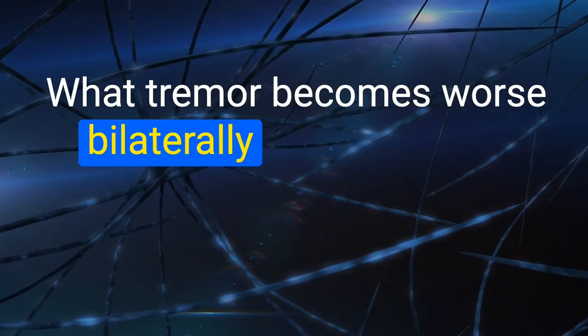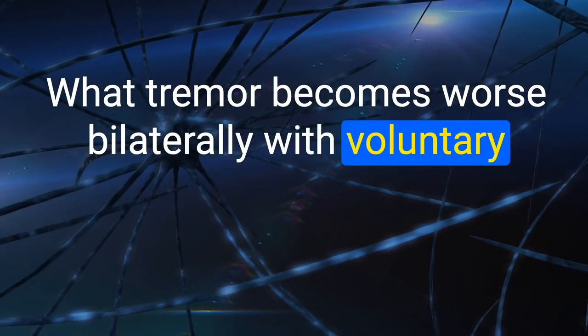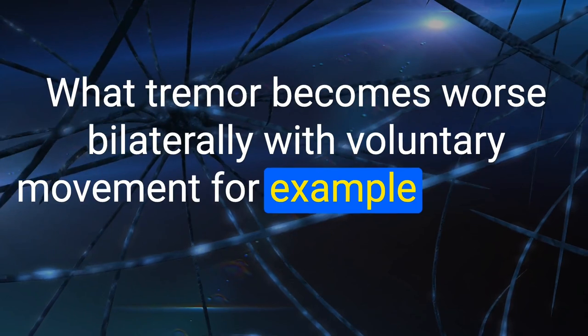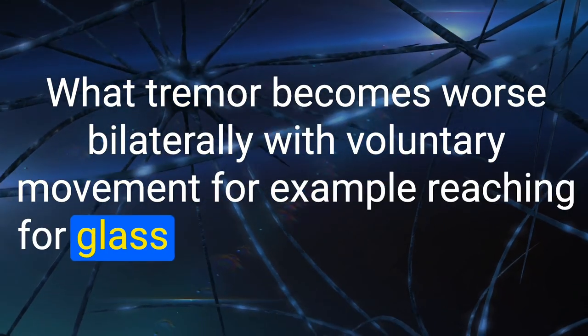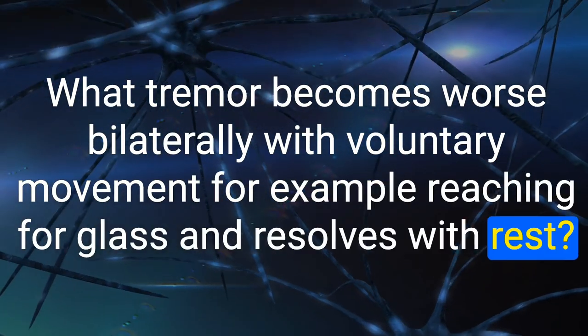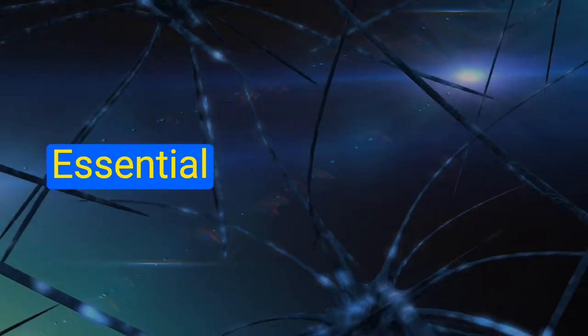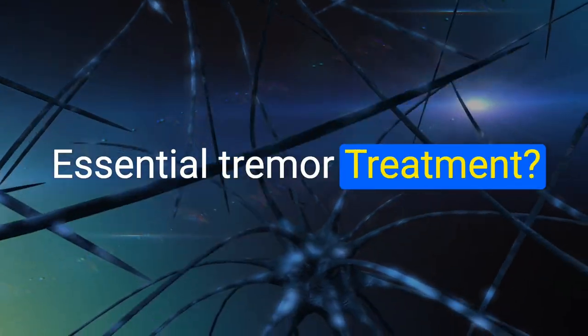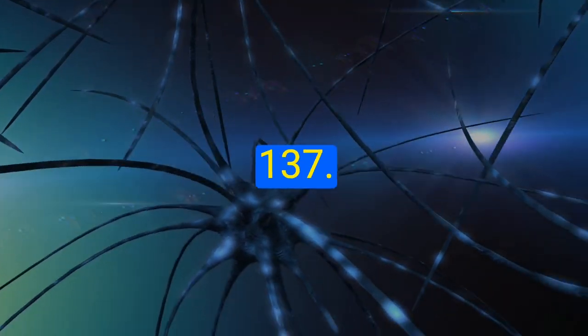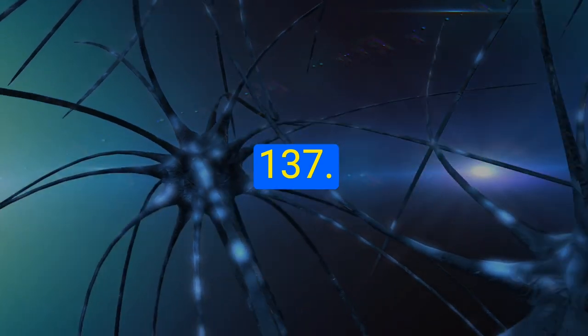136. What tremor becomes worse bilaterally with voluntary movement (e.g., reaching for a glass) and resolves with rest? Essential tremor. Treatment: propranolol.